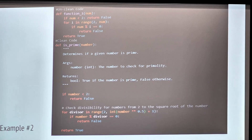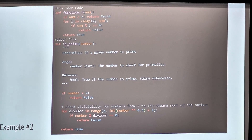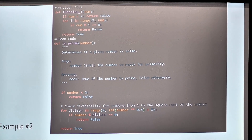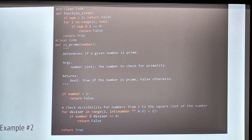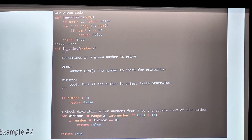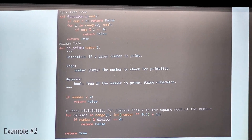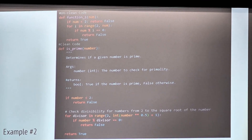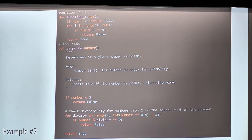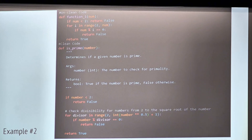You want to make sure that even variables within your for loops and if statements are descriptive. That's step one: clean, readable code. Refactor often, and write descriptive function names, variable names, and code file names as well.